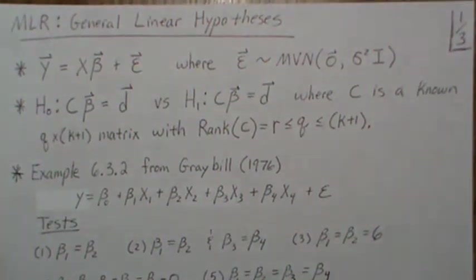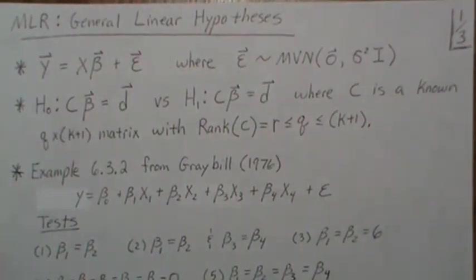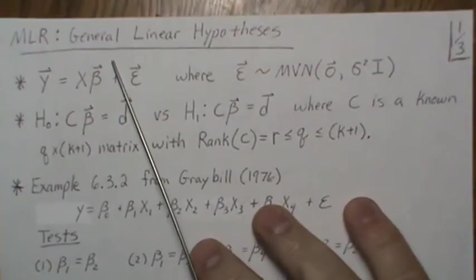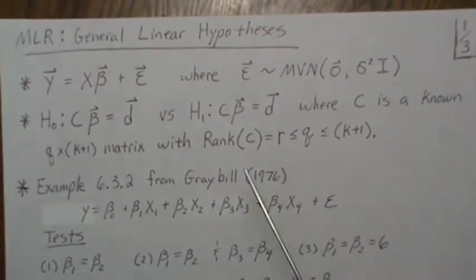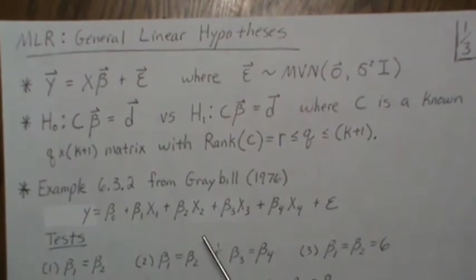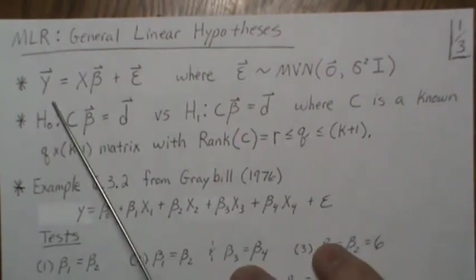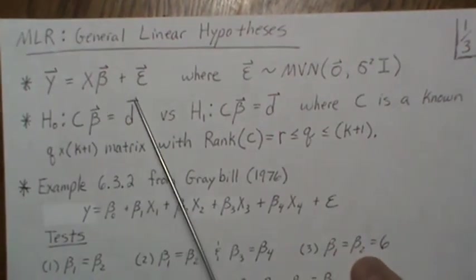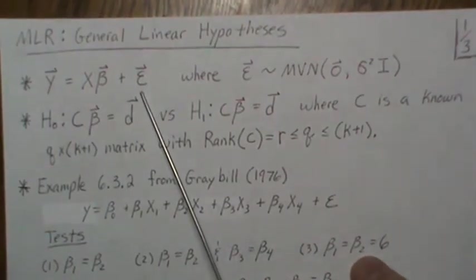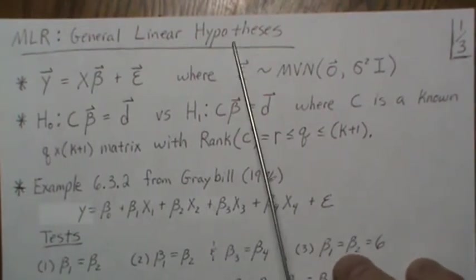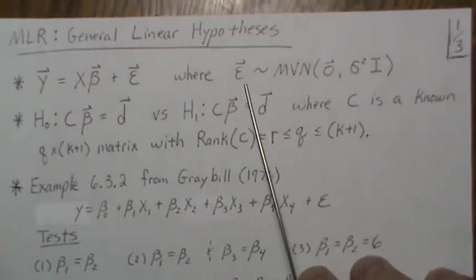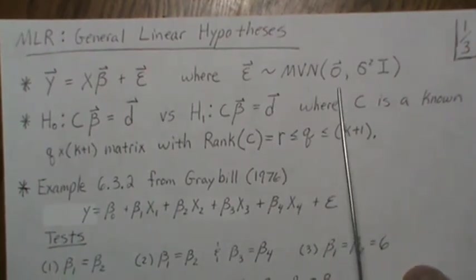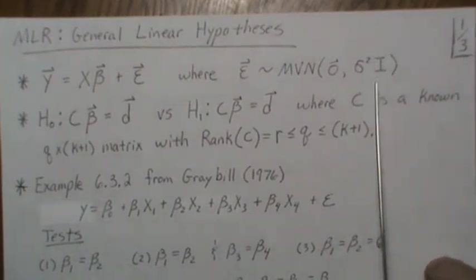In this video we're in the multiple linear regression setting and we're going to derive the general linear hypothesis. As a reminder, our model is y = X*beta + epsilon. Since we're going to develop a test, we need distributional properties, so epsilon is multivariate normal with mean zero and variance-covariance matrix sigma-squared I.